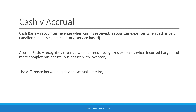The accrual basis recognizes revenue when it's earned rather than received, and recognizes expense when incurred rather than when paid. For example, if you perform work of $5,000 in June but are not paid until August, the accrual method recognizes the $5,000 of income in June when it was earned, where the cash basis would not recognize that until August when it was paid.